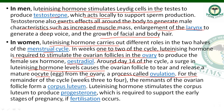For the remainder of the cycle, weeks three to four, the remnant of the ovarian follicle remains. The remnant forms the corpus luteum, which is required to support the early stages of pregnancy if fertilization occurs.